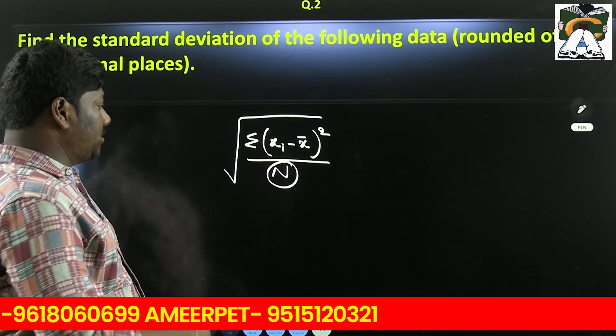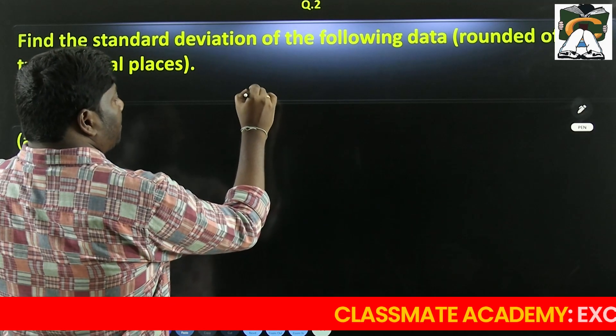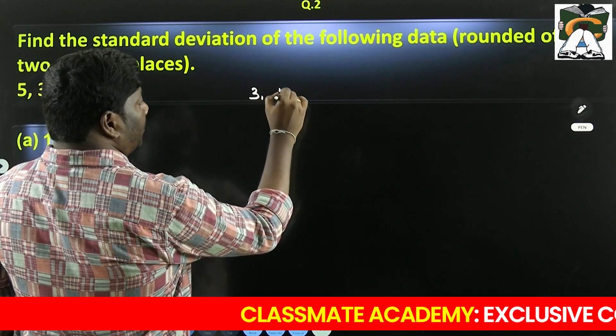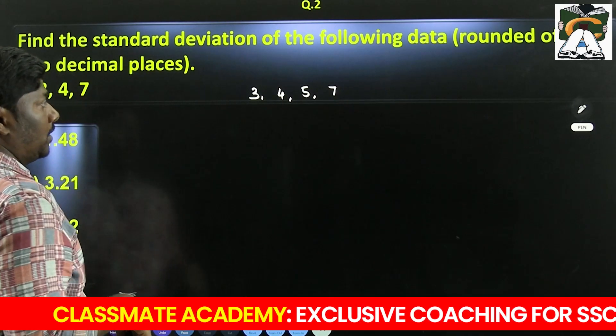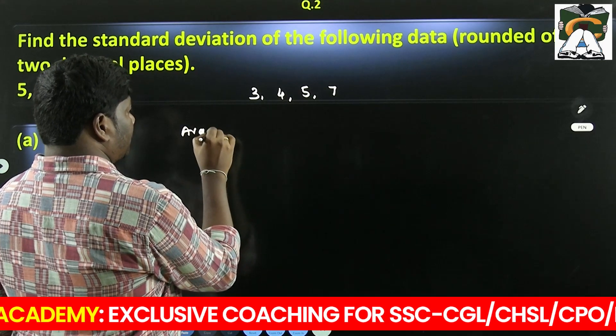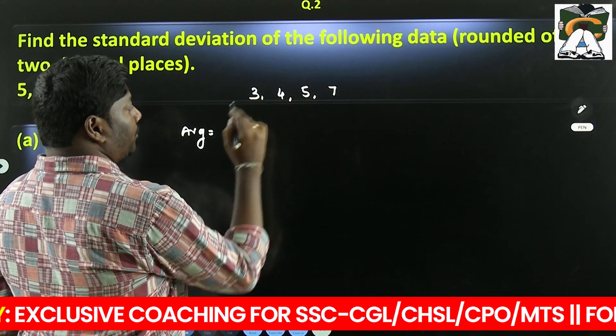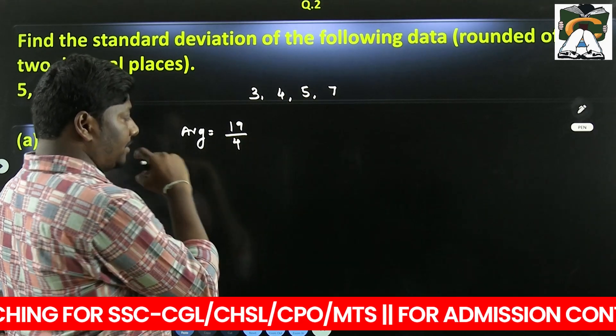Now we will try to do this with the given observations: 3, 4, 5, 7. First, find the average. 3 plus 4 is 7, plus 5 is 12, plus 7 is 19, divided by 4 equals 19 by 4. Now we need to find the differences.